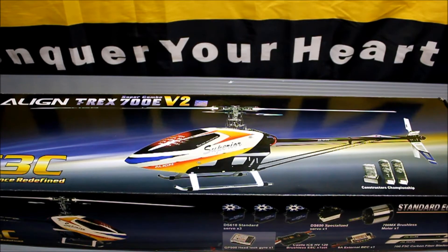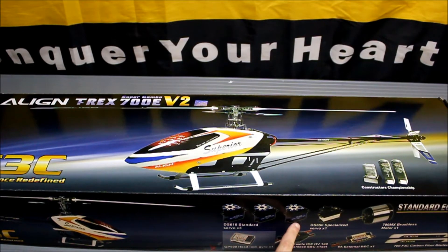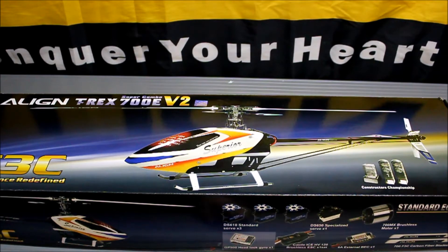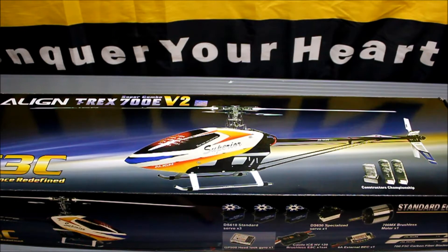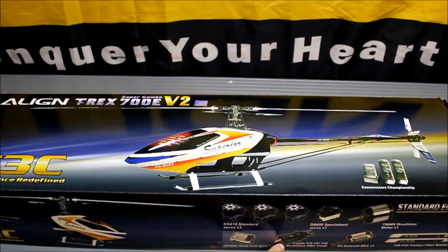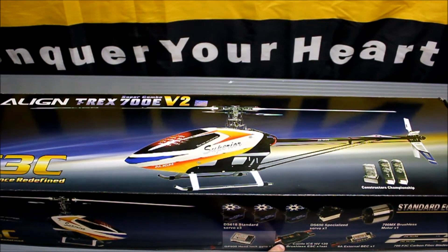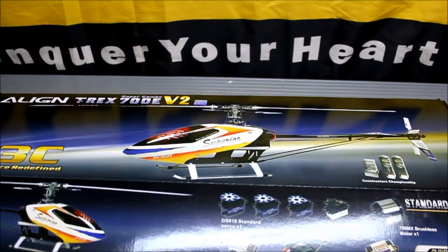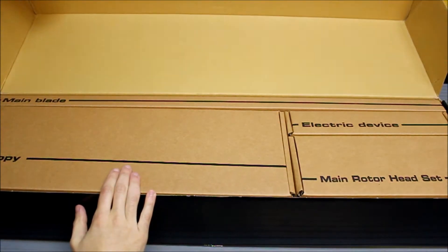Your 700E kit comes with 3610 digital cyclic servos, a 650 tail rotor servo, 700MX brushless motor which is a lower KV than the 3D kit at 470KV. You've got your GP900 heading lock tail gyro, a Castle Creations ICE 120HV V2 speed control, your BEC and a set of 700mm line F3C main blades.